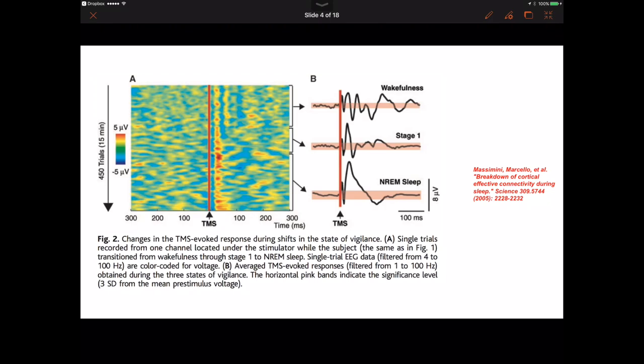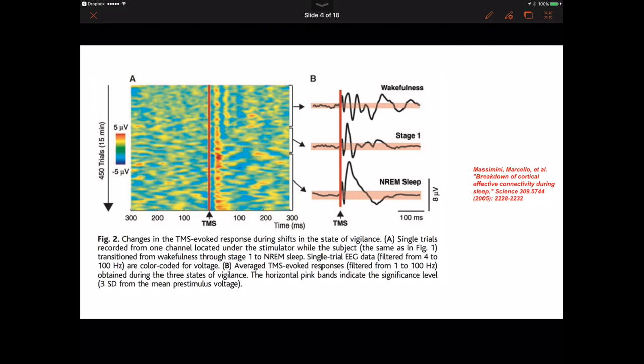Here is another way of showing this. You see in wakefulness the reverberation waves migrating through cortical regions over time. Here is sleep stage 1, light sleep. And here is non-REM, deep sleep. You can see here the signal of the impulse accumulating on the left-hand side, and the complexity of this area is decreasing significantly.